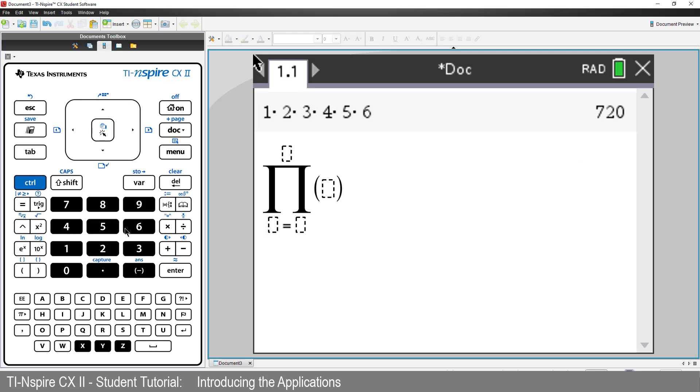We need to use a variable to represent each of the numbers 1 through to 6. I'll use N. Press Tab. N starts at 1. Press Tab again. N finishes at 6. And press Tab. We want to find the product of each of the values of N. And now press Enter. Of course we get the same answer.